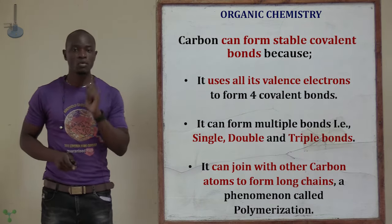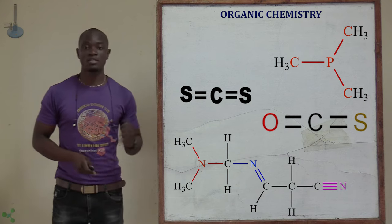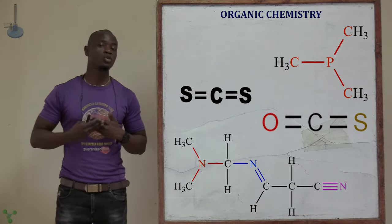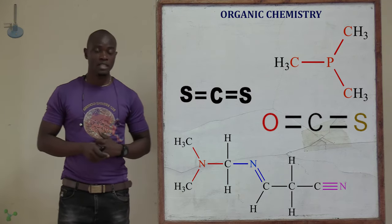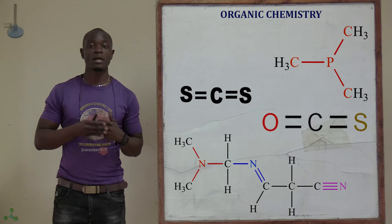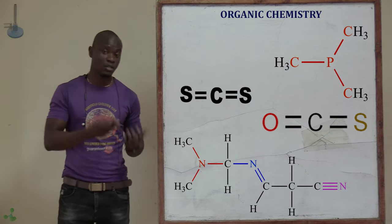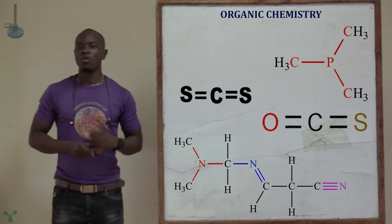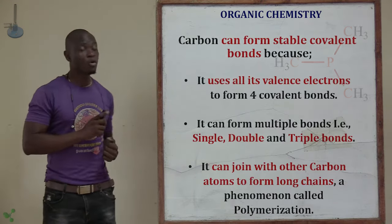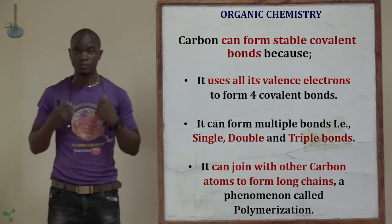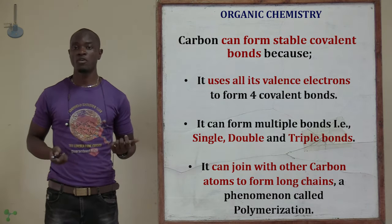The carbon element is able to form stable covalent bonds with other carbon atoms and with other elements. In the chains we have in organic chemistry, the carbon atom is able to bond to other carbon atoms as well as to other different types of atoms. It's not only carbon bonding with hydrogen — carbon can bond with other carbon atoms, with hydrogen, or with other atoms in the periodic table. The first reason carbon forms different bonds is that it uses all four valence electrons to form covalent bonds.